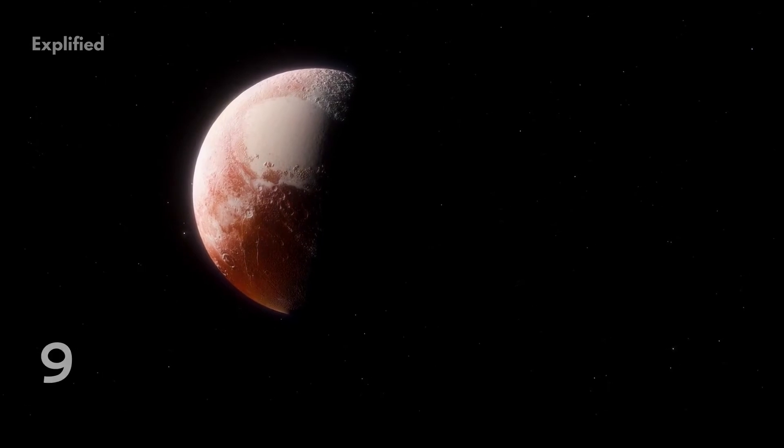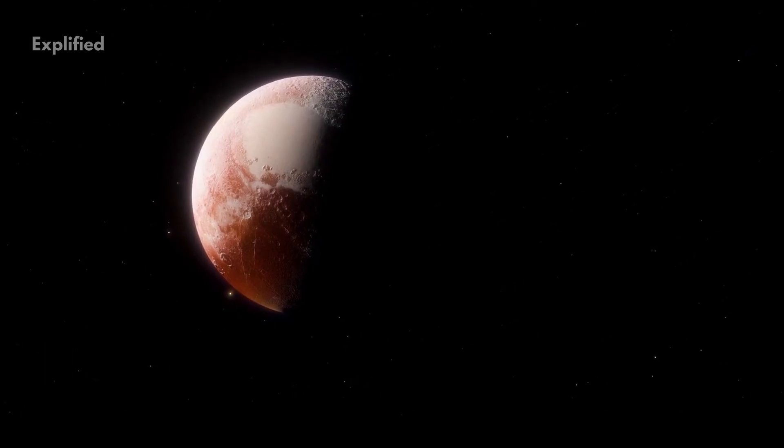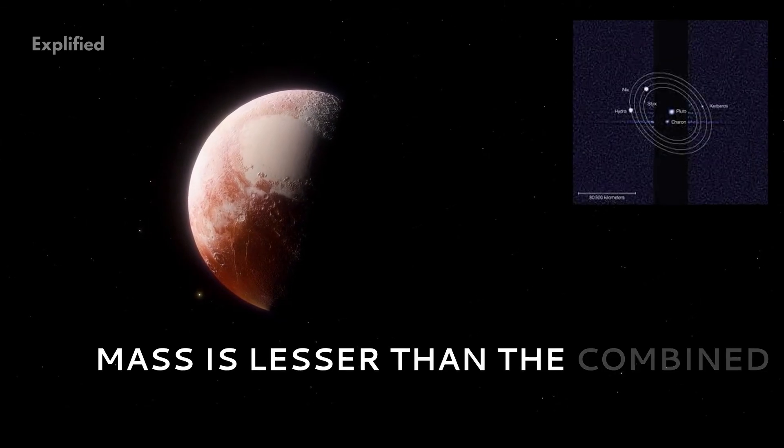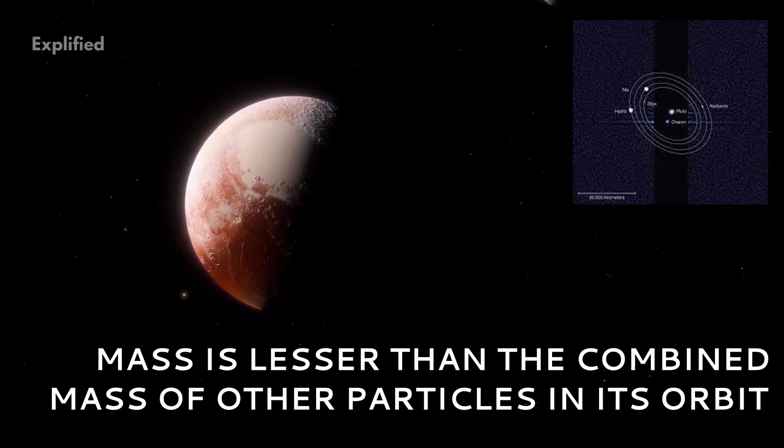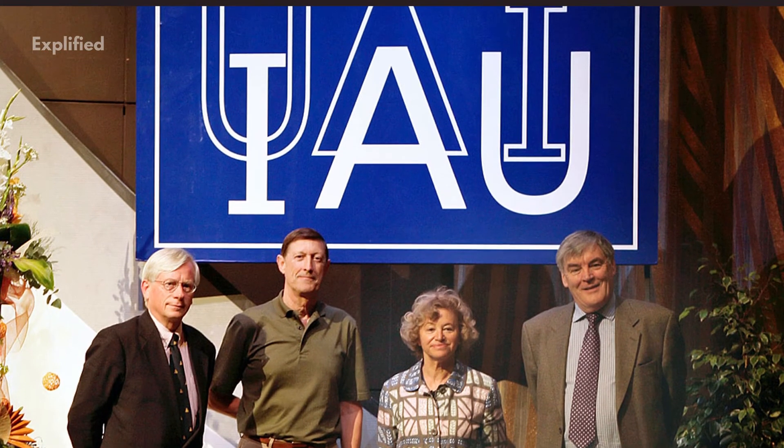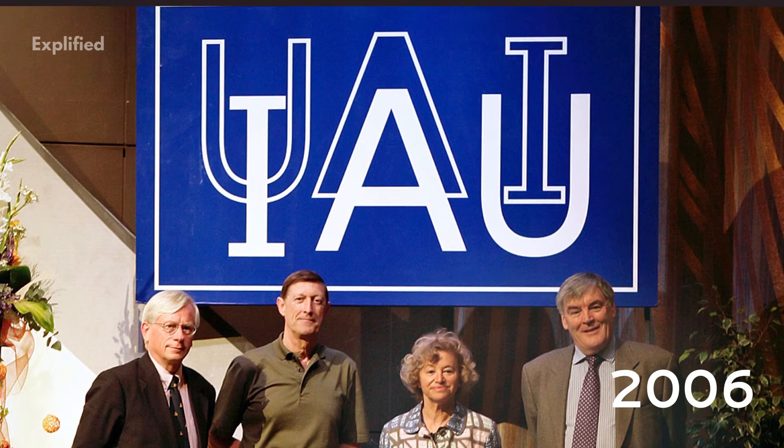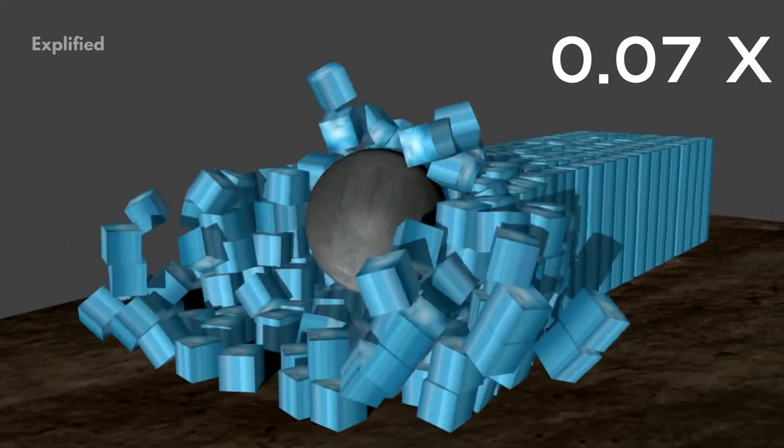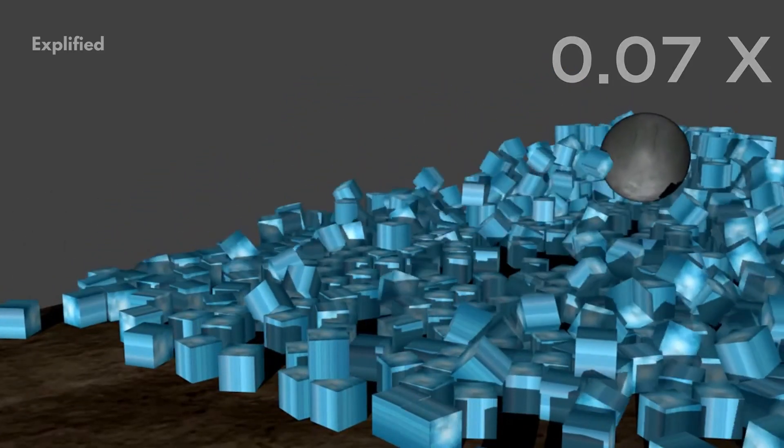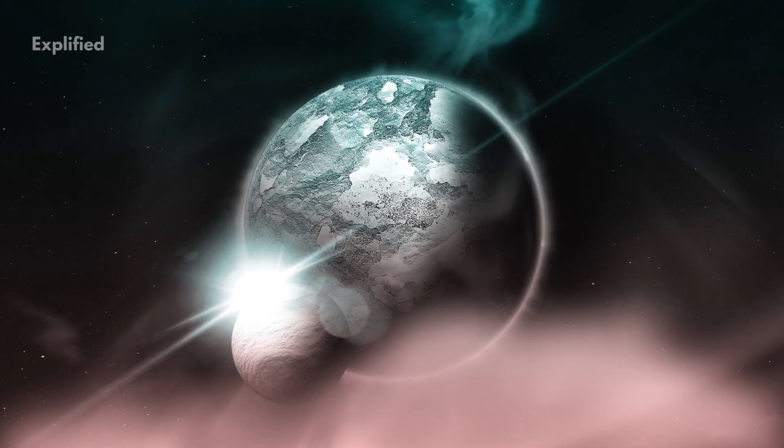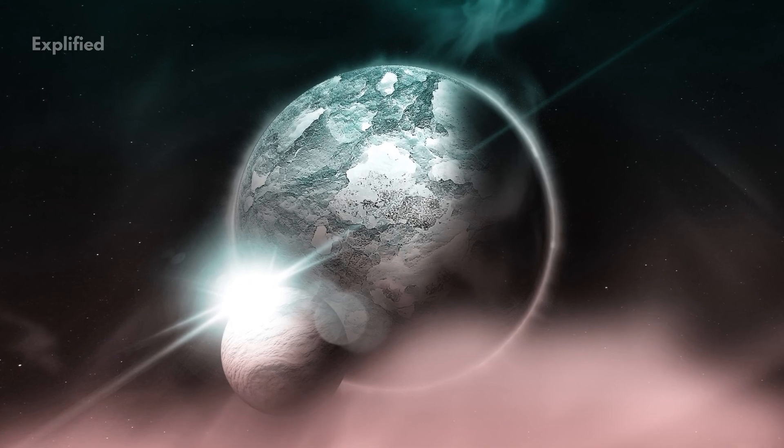Number 9. The main reason why Pluto was reclassified as a dwarf planet is because its mass is lesser than the combined mass of other particles in its orbit. This was the third criterion stated by the IAU in 2006. Its mass is, fascinatingly, only 0.07 times the mass of other objects in its orbit. Hence, the IAU had to demote it from being a planet to a dwarf planet.